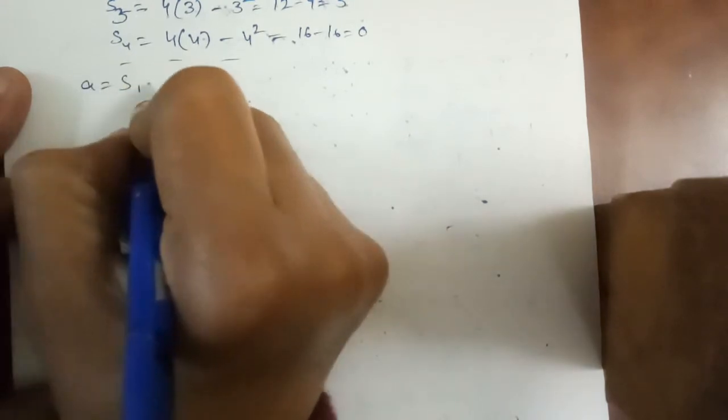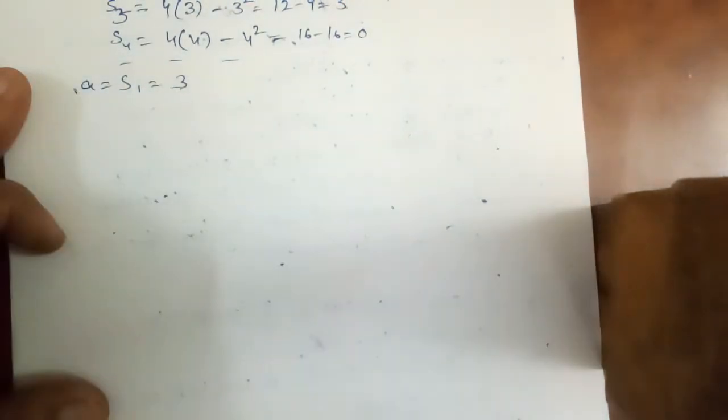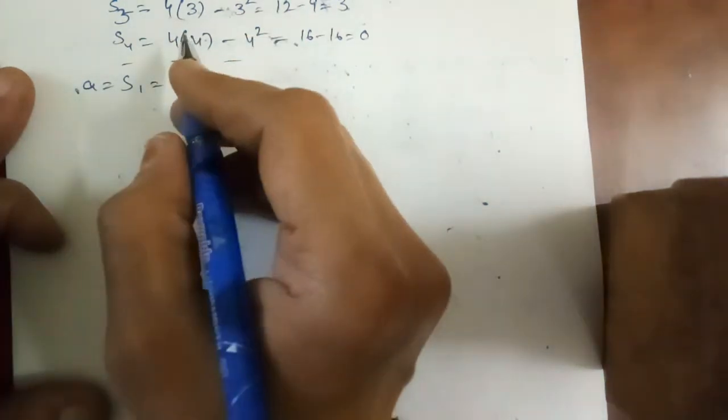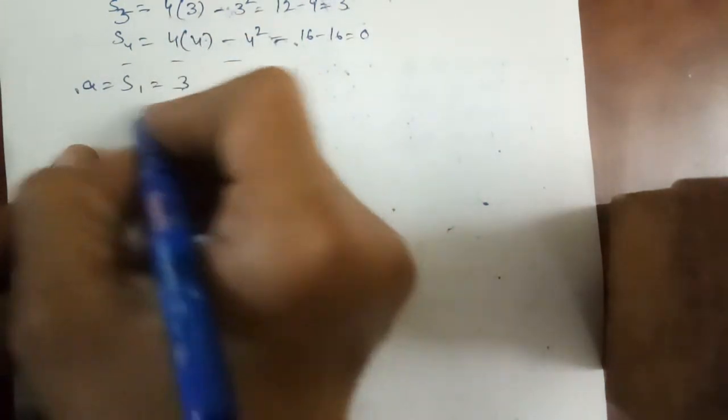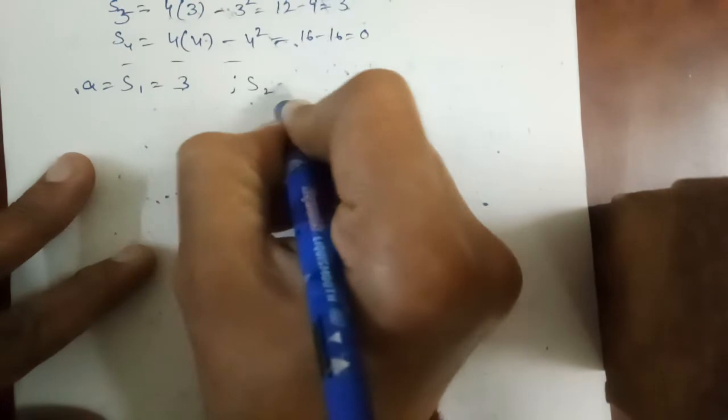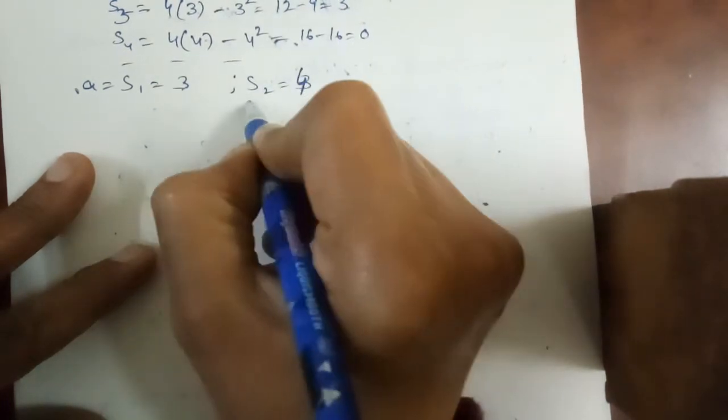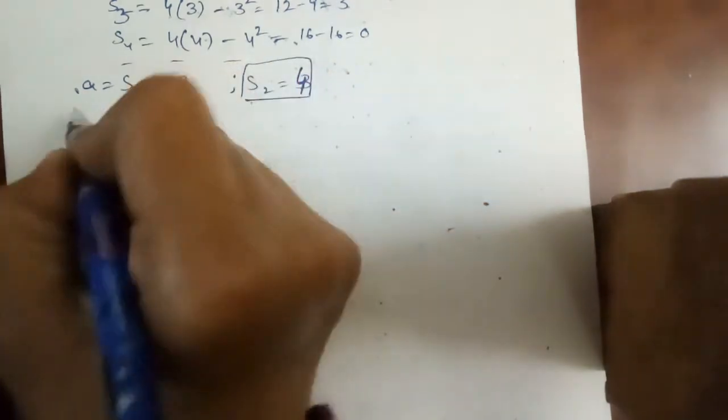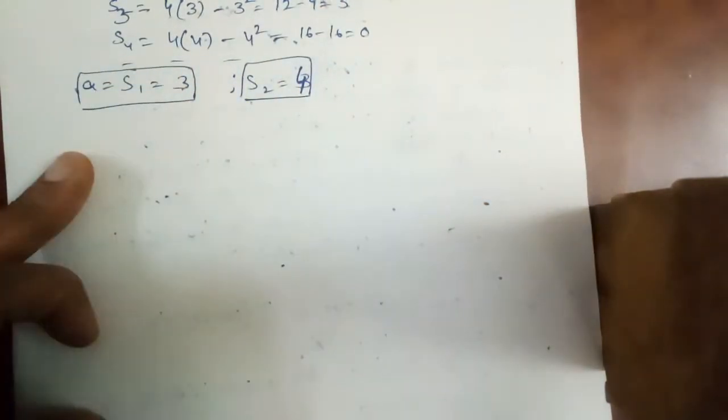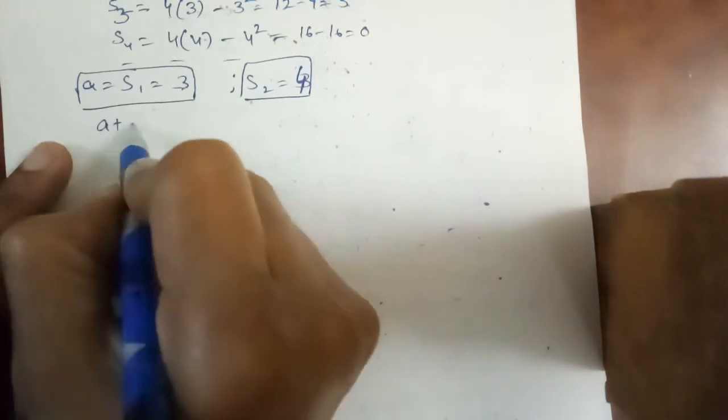Now A is equal to S1, that is 3. So A is 3. Next sum of first two terms, S2 is equal to 4.